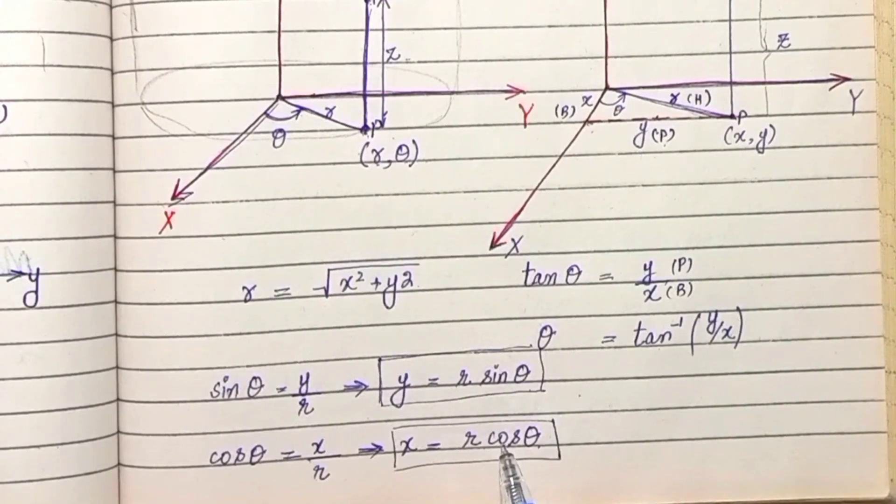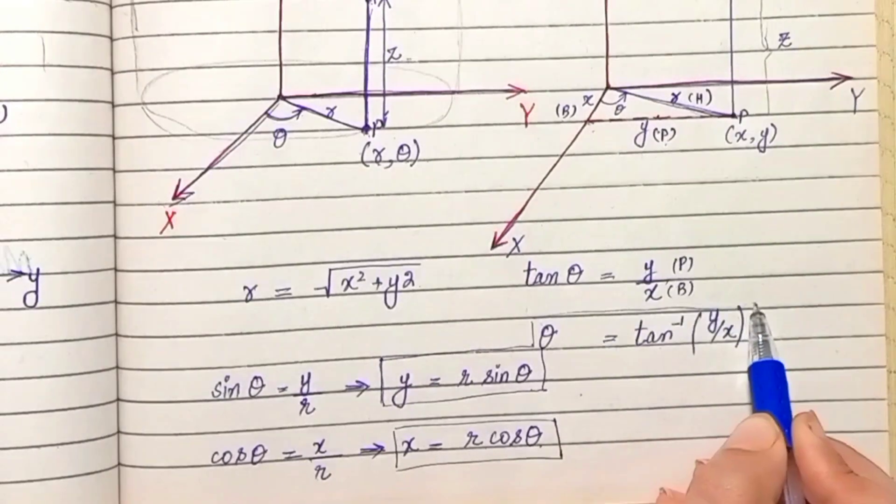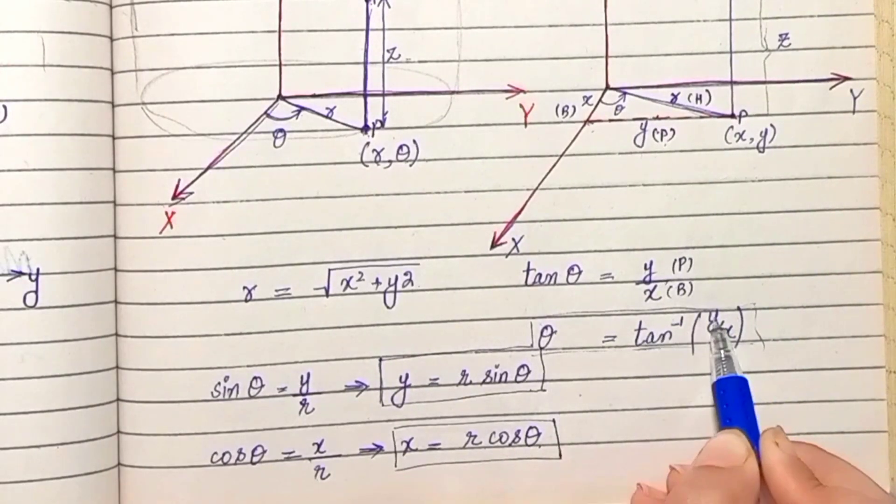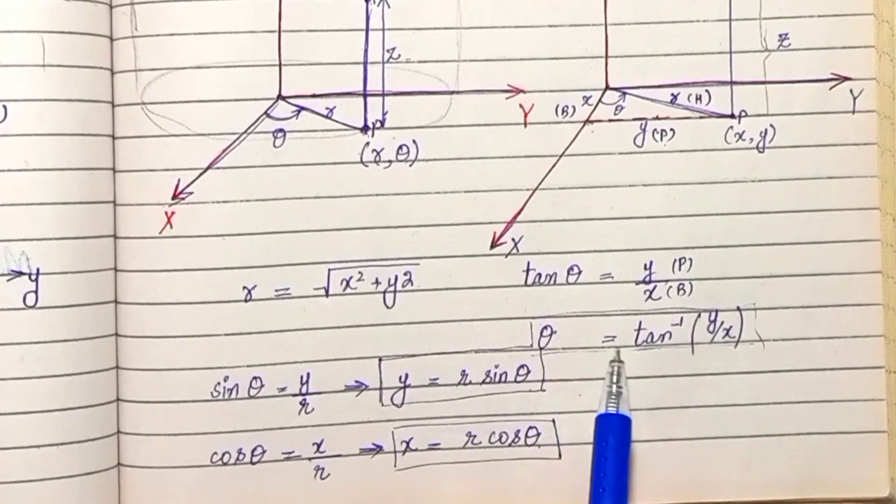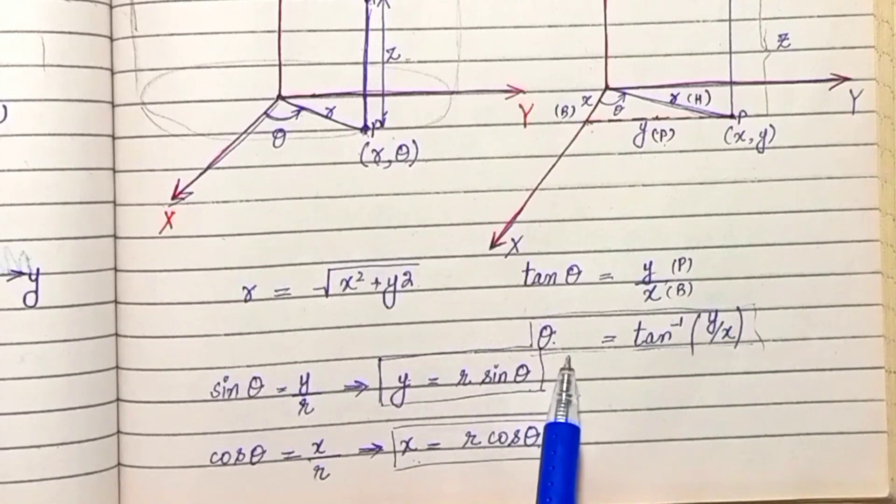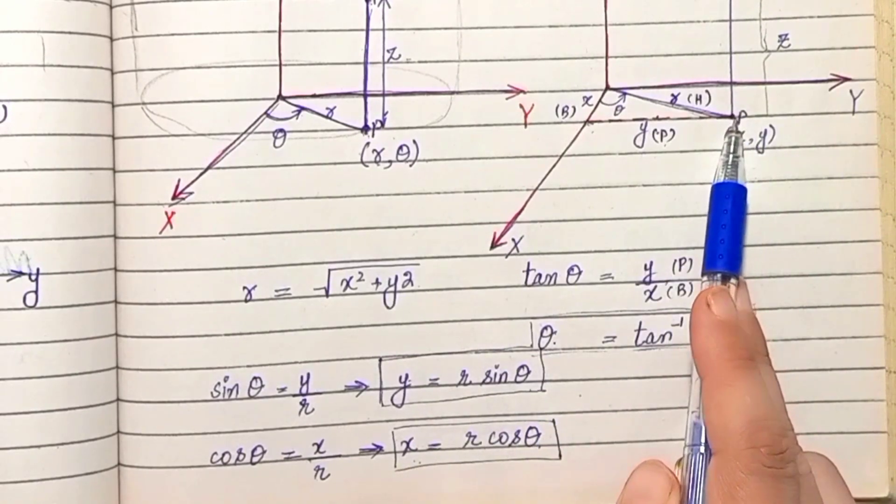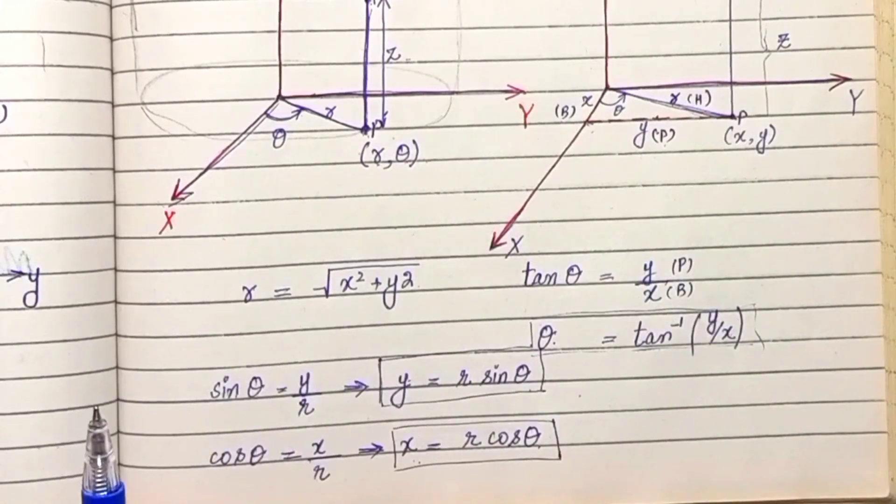Y coordinate polar coordinates mein r sin theta ke barabar ho jayega. X coordinate r cos theta ke barabar ho jayega, aur theta jo hai wo barabar ho jayega tan inverse y divided by x ke. So x, y, aur theta ke hisab se hum point ki location bata sakte hain in cylindrical coordinate system.